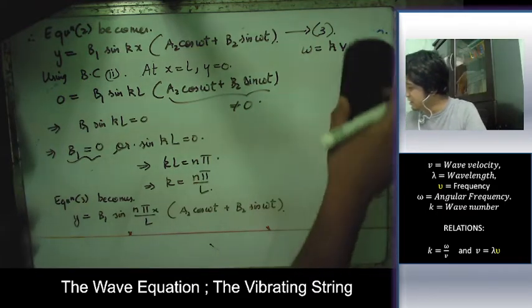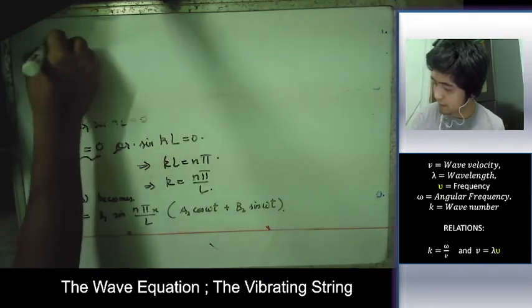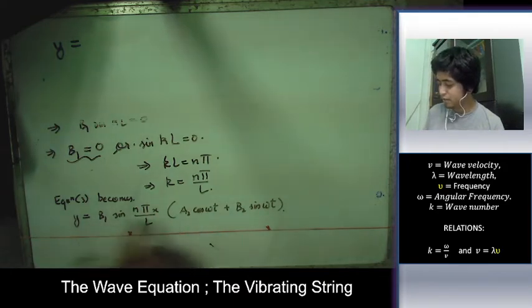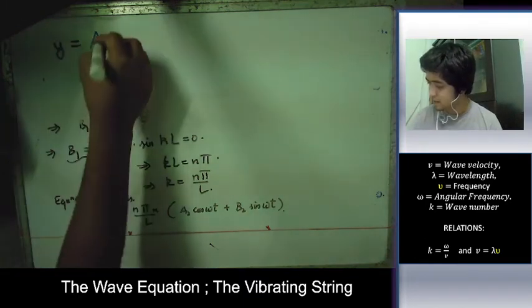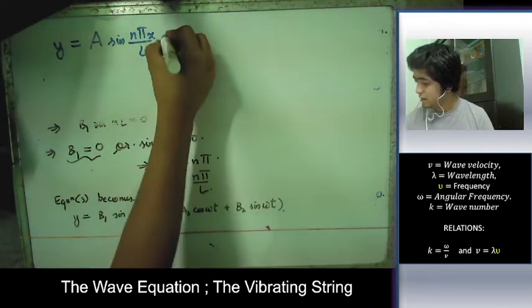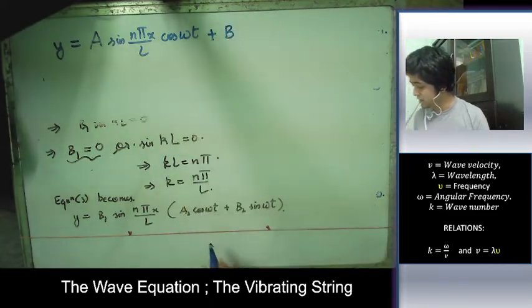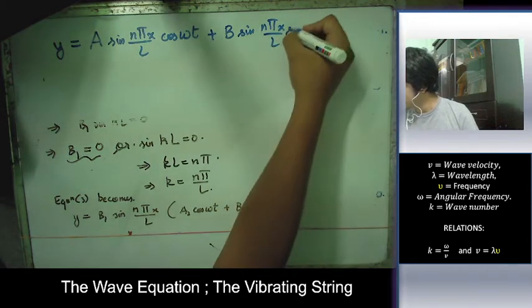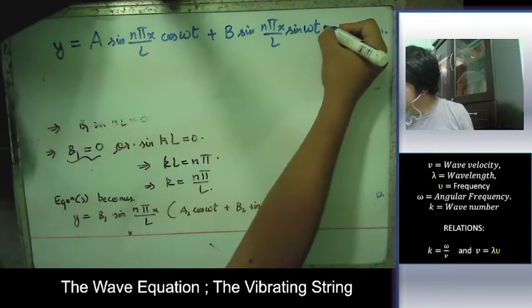Substituting k = nπ/L, and combining constants (B₁A₂ = A, B₁B₂ = B), equation 3 becomes y = A·sin(nπx/L)·cos(ωt) + B·sin(nπx/L)·sin(ωt).